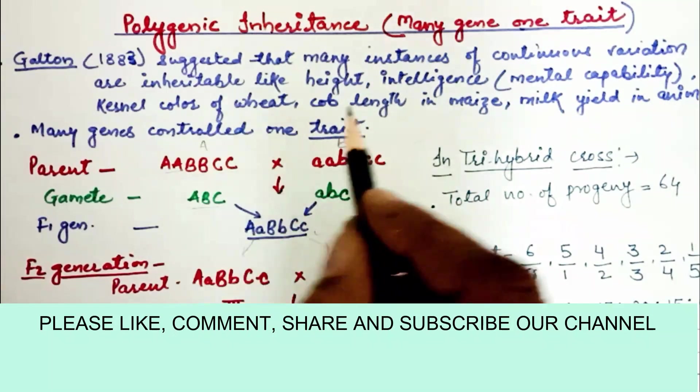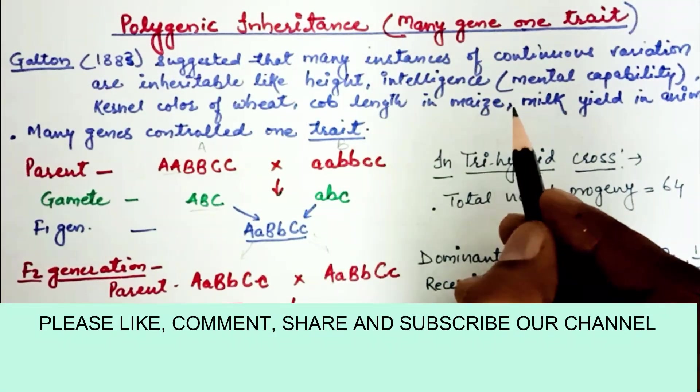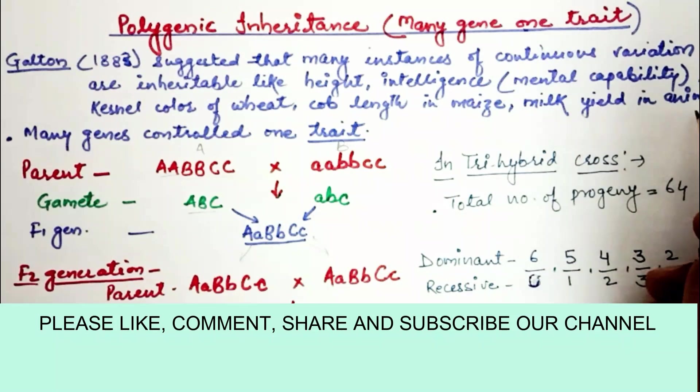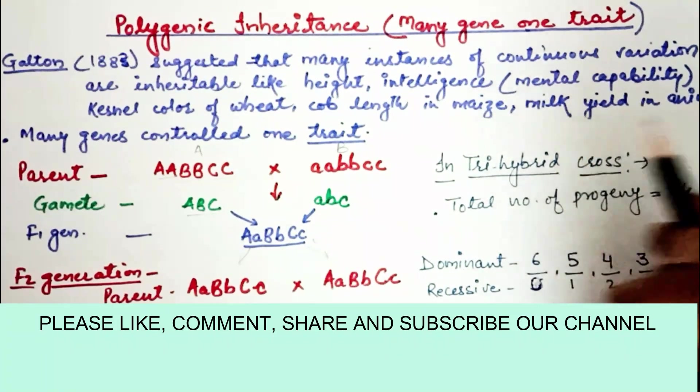Examples include kernel color of wheat, cob length in maize, milk yield in animals, and skin color.